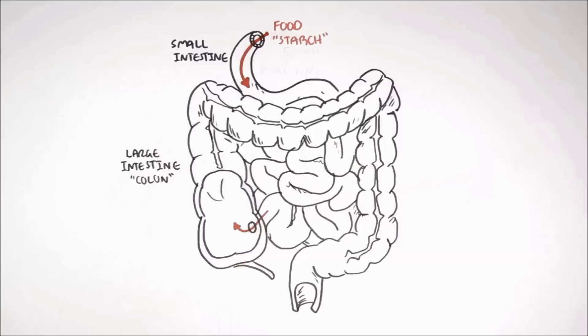Resistant starch, for example, is a portion of starch that escapes digestion in the small intestine because it is resistant to human digestive enzymes.